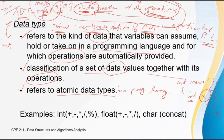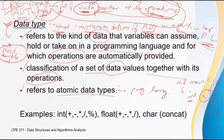So data type is an actual implementation of ADT — the model — while ADT is just a model, like a blueprint. Data type is the actual implementation of the ADT blueprint in a particular programming language. For example, in Java it is still 'int'. For the ADT real numbers, the data type implementation in C language would be either 'float' or 'double'. In Java it is still float and double, but in Pascal programming language it is 'real', not float or double.